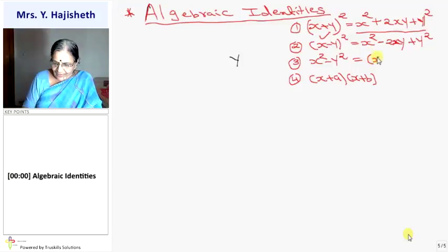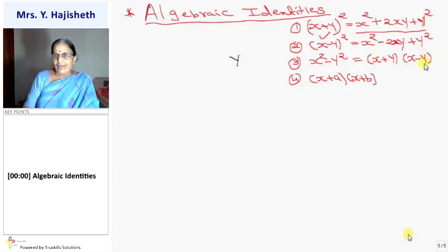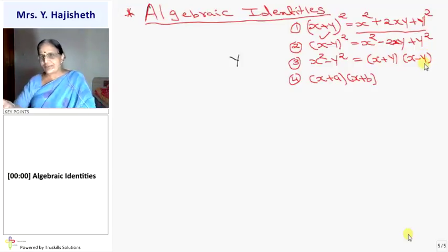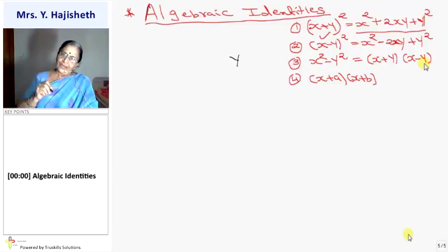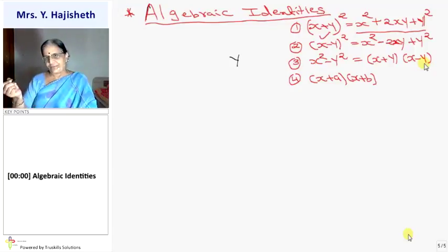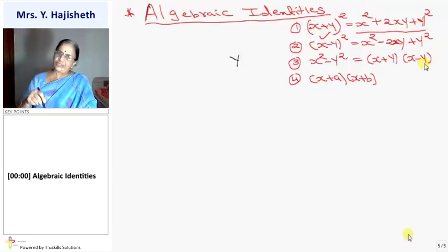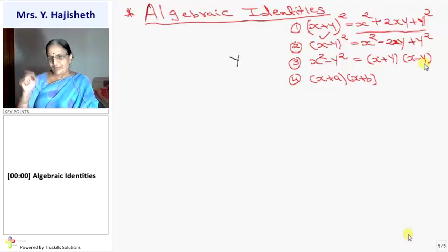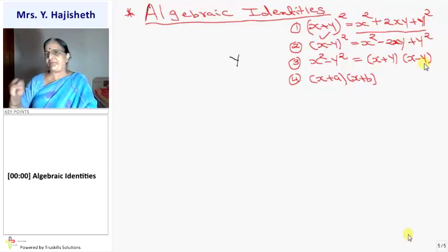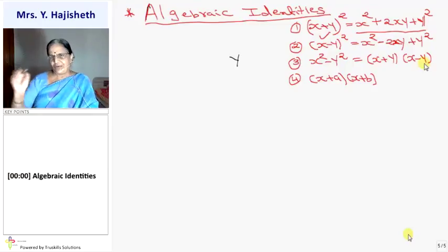For difference of two squares: one bracket is the sum of their square roots, and another bracket is the difference of their square roots. x plus y into x minus y equals x squared minus y squared. Sum of two numbers into difference of two numbers gives square of first minus square of second. In place of x and y, they can give any term, any number, any variable.